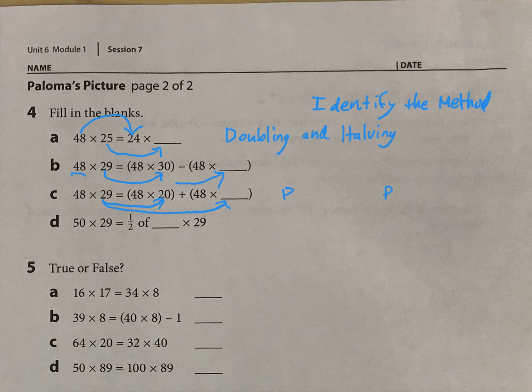And then finally, you can look here, and you're going to recognize the method as 5 as half of 10, but just be careful, because it's actually not 5 as half of 10, it's 50 is half of 100.